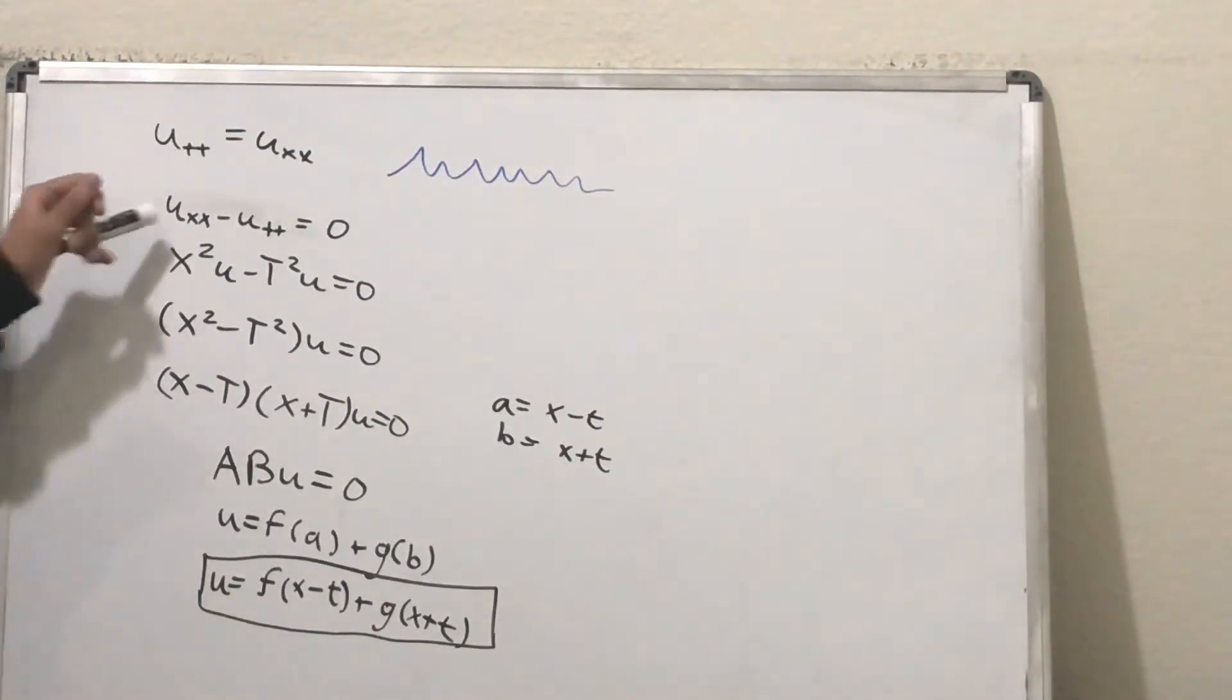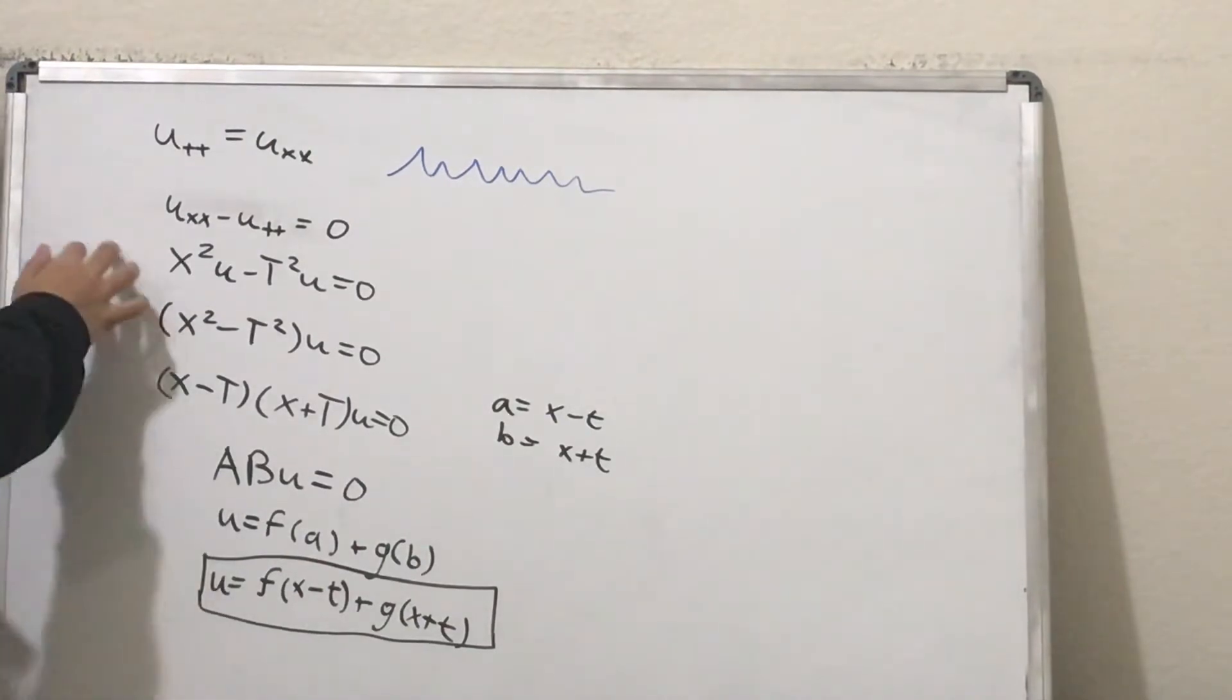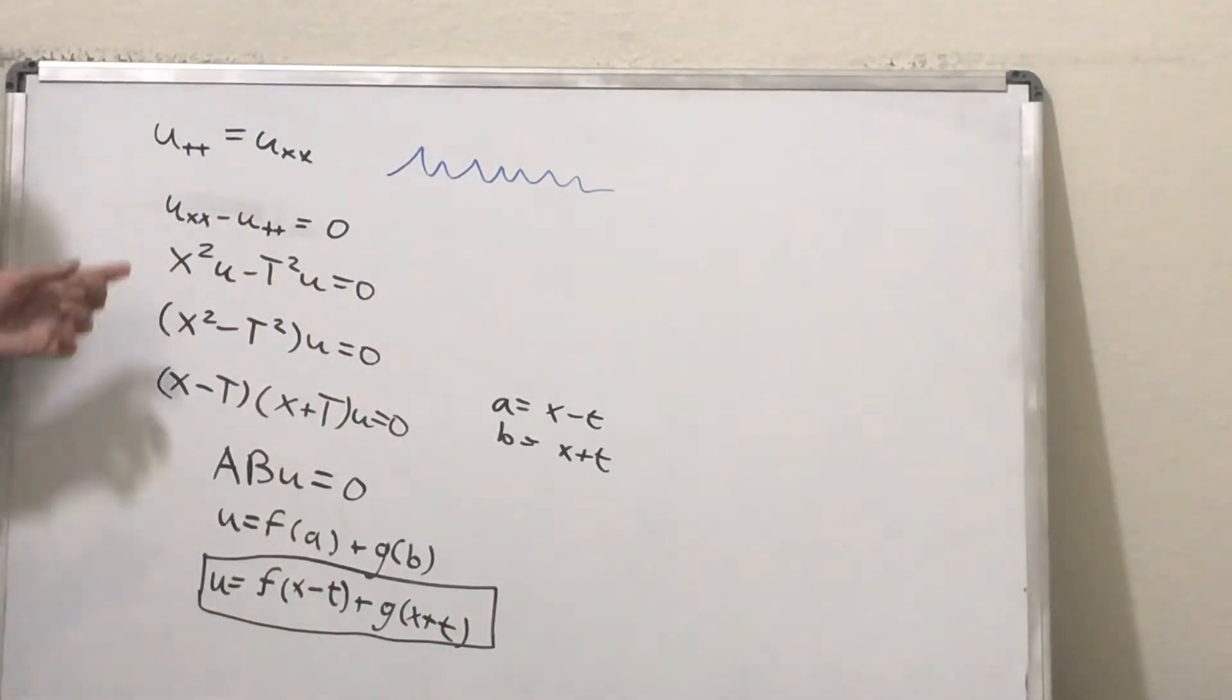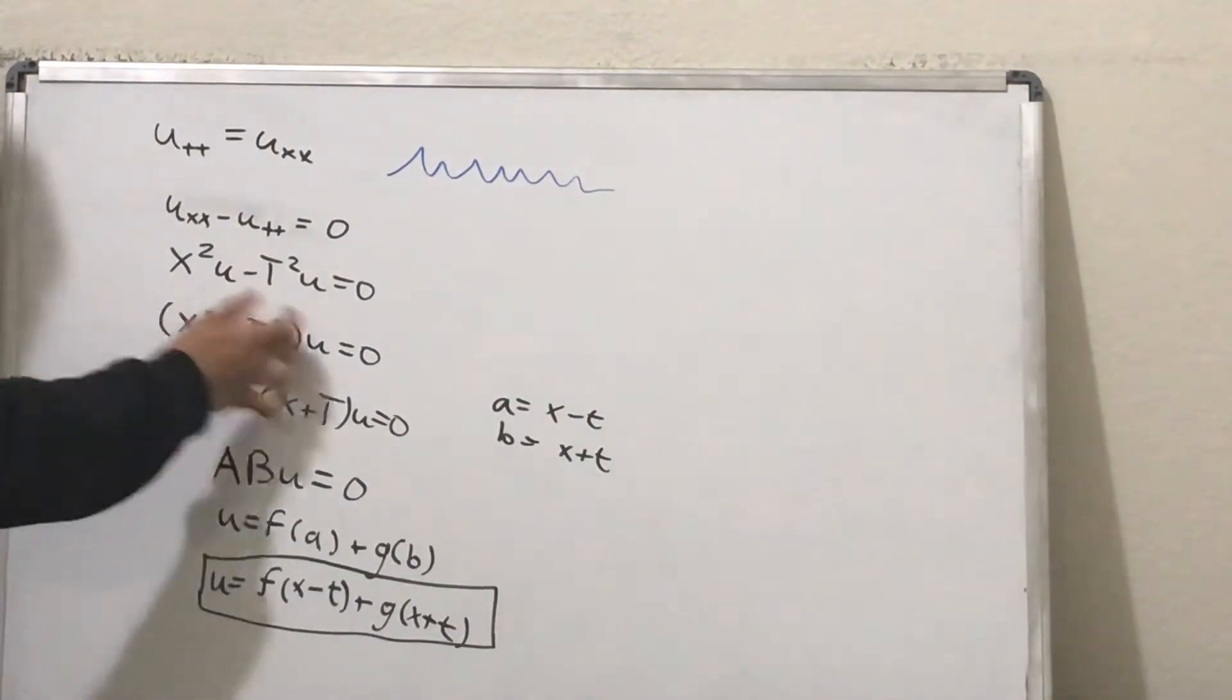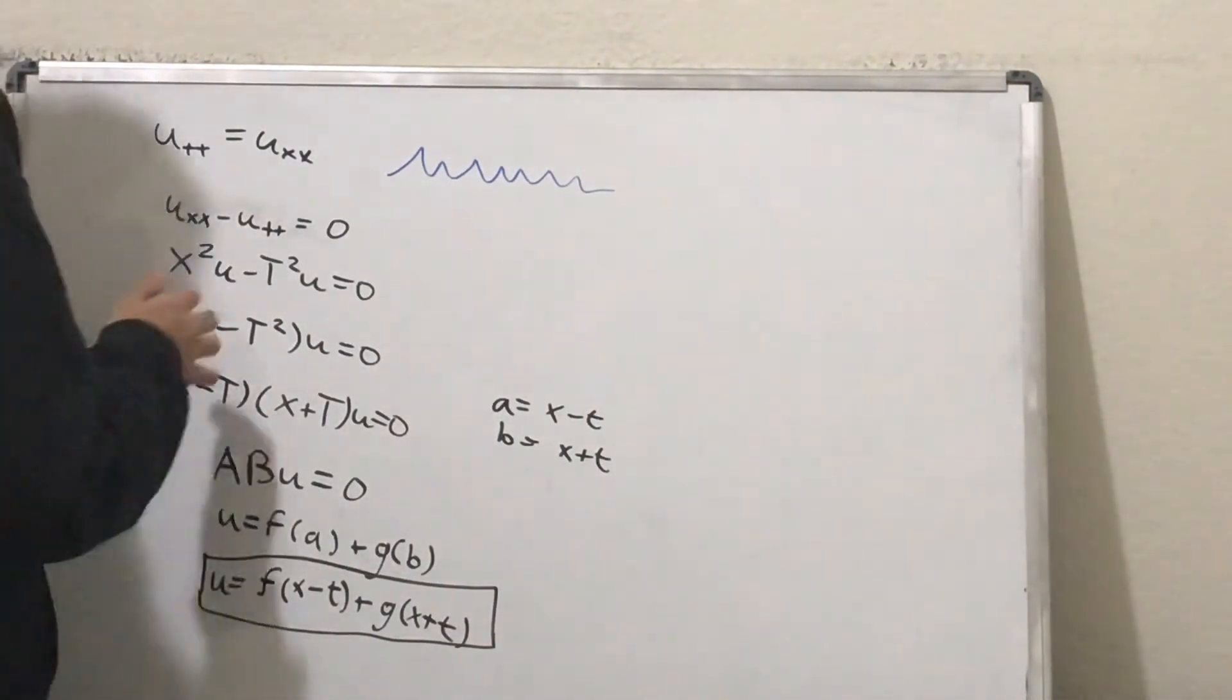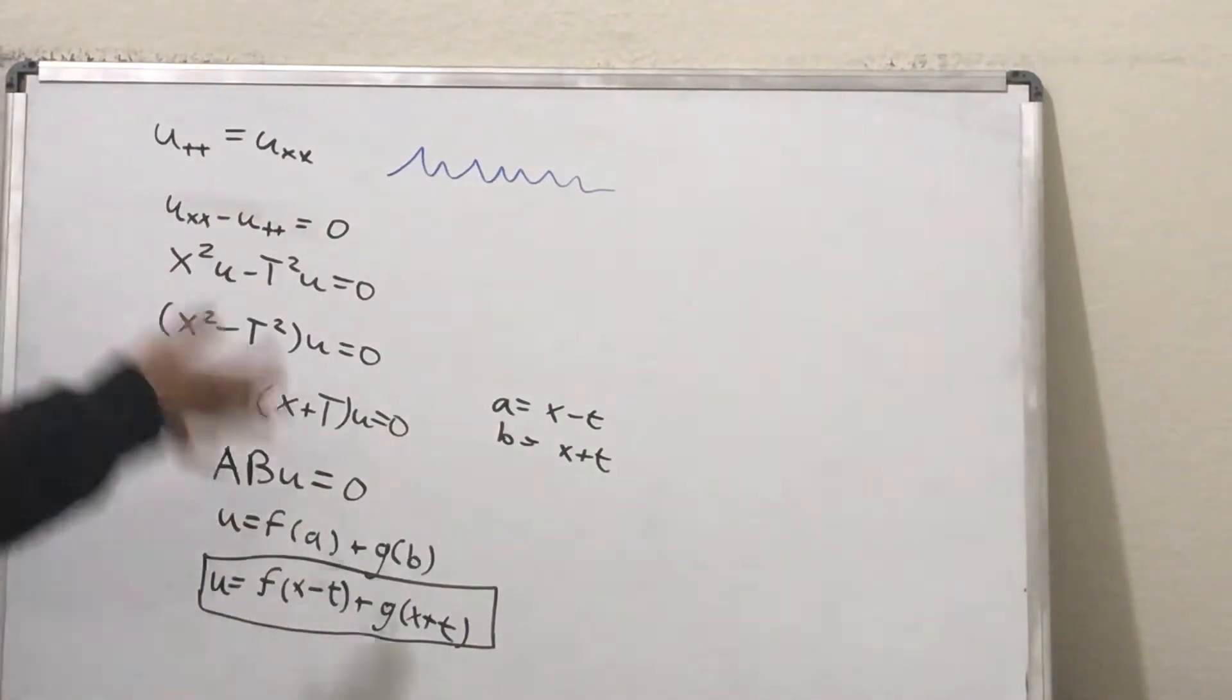I'm just going to take the derivative to be used as an operator. So, here's where the derivative is an operator. Then, I'm going to factor out the u. And that makes sense because the derivative is linear.